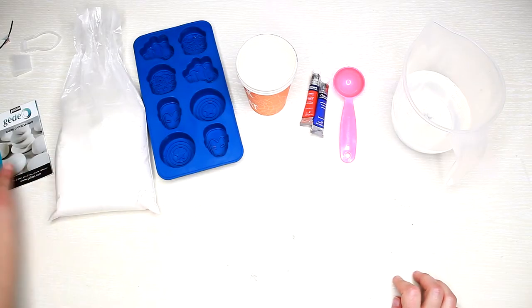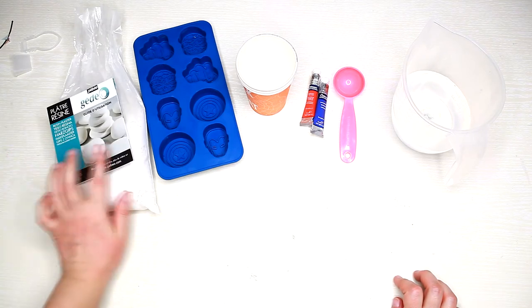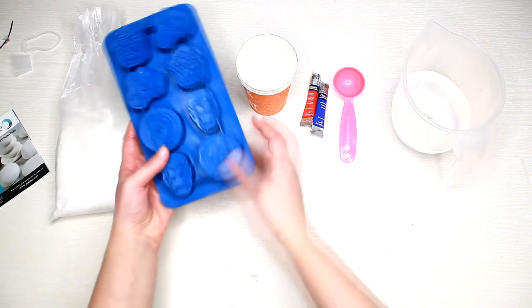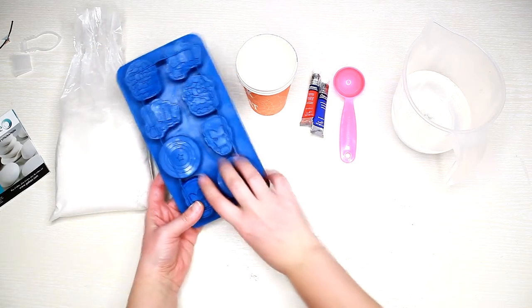For this project I used plaster. I had the GDO resin plaster but you can use plaster of Paris as well. A silicone mold - I'm using an ice tray with these Avengers inspired shapes.